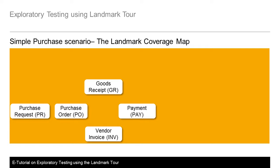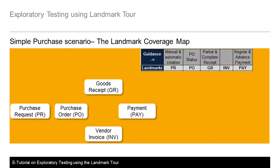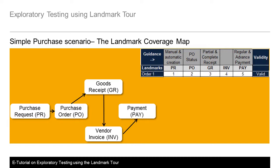So we've identified the five important landmarks of this part of the application — this is the first important step. High-level guidance regarding these landmarks in the planning phase can prove to be really useful during the time of test execution. At execution time, we would normally execute these landmarks as in order 1, which is a straightforward scenario. However, this isn't the only order in which this scenario can be executed.